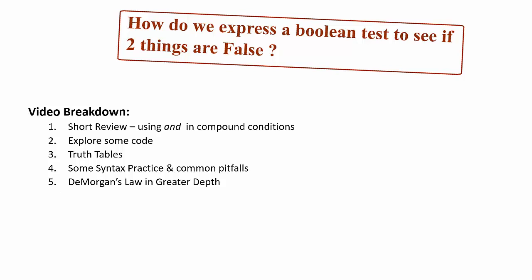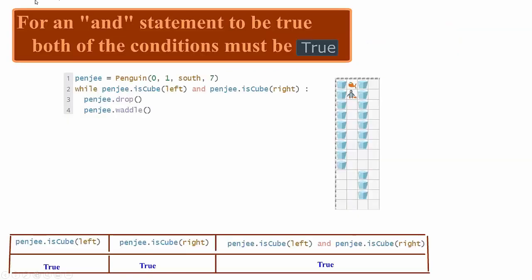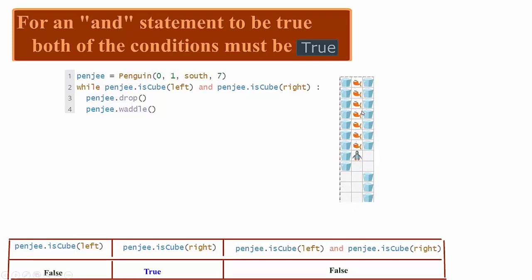Let's start with a short review of using AND in compound conditions. For an AND statement to be true, both of the conditions must be true. Here's a program from Pengy where our penguin goes down a column and wants to drop fish whenever there is a cube on the penguin's left and the penguin's right. As long as is_cube_left is true and is_cube_right is also true, they are both true and the entire statement is true. Here is the first time that one of the two conditions is false — something we learned before.